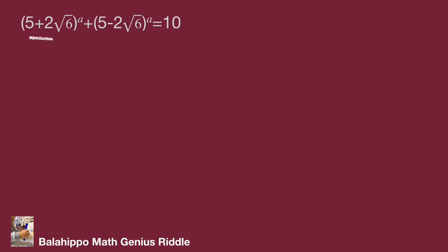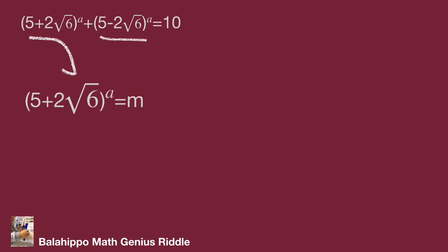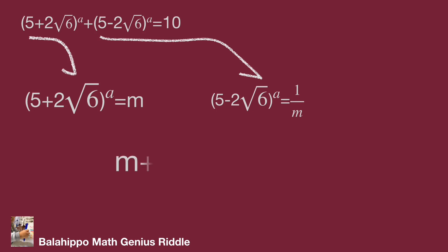Let (5 + 2√6)^a equal to m, so (5 − 2√6)^a equals 1/m. Substituting into the equation, we get the new equation: m plus 1/m equals 10.